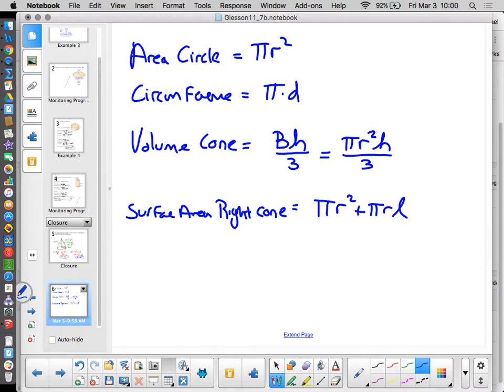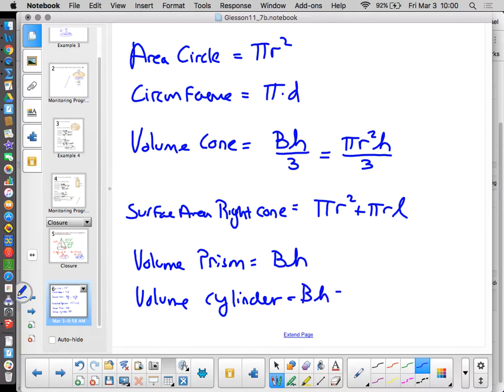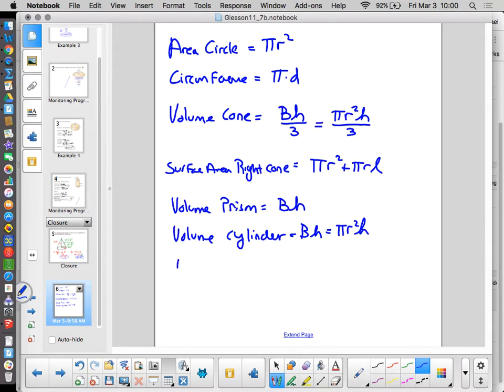Now, this is in addition to some of our other formulas, like volume of a prism, which is base area times height. And volume of a cylinder, which is also base area times height, but since the base is guaranteed to be a circle, we could use pi r squared h. And finally, the volume of a pyramid is still base area times height divided by 3.